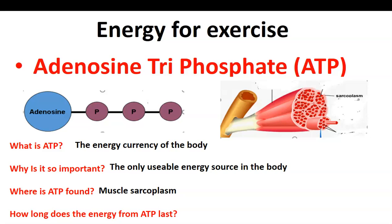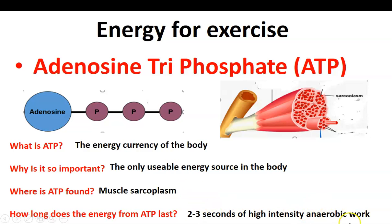If ATP is our only usable energy source, the energy currency of our body, located in the muscle sarcoplasm, how long does it allow us to use that energy for? Well, it actually gives us only two to three seconds of high-intensity anaerobic work. Why high-intensity? Because the change in intensity from doing nothing to doing something quite exhausting makes it high-intensity. And it's anaerobic because within two to three seconds you do not have chance to get oxygen into your body to help create energy.